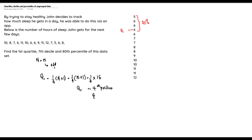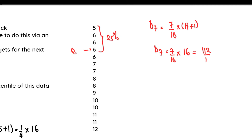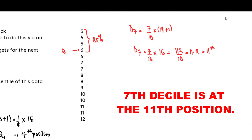Now let's solve for the seventh decile. The formula for D7 is: D7 = (7/10) × (n + 1). That equals (7/10) × 16. Seven times 16 gives us 112, divided by 10 equals 11.2, which is approximately 11. So the seventh decile is located in the 11th position.